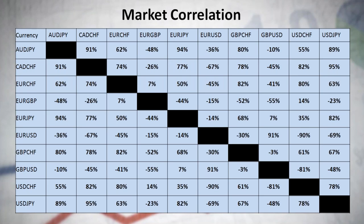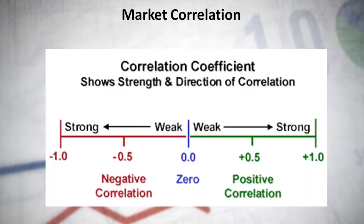Currency correlation tells us whether two currency pairs move in the same, opposite, or totally random direction over some period of time. Positive correlation with a coefficient of plus 50% to 100% implies that the two currency pairs will move almost in the same direction. Negative correlation, when the coefficient is from minus 100% to minus 50%, means they move almost in the opposite direction. If the correlation is about 0, the movements are completely independent and random — we have no idea how one pair will move in relation to the other.